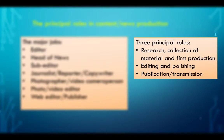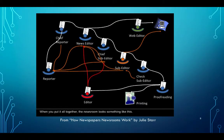If we had to group these major jobs into three principal roles, we find: roles related to research, collection of material and first production — these are the journalists, reporters, copywriters, photographers and video camera person. Then we have editing and polishing — the head of news, sub-editor, and editor. Then we have publication and transmission. As you can see in this infographic, it is not a linear process, but all the different roles are active throughout the day.